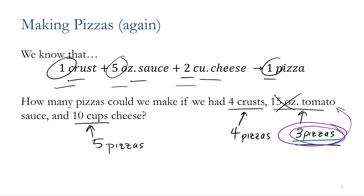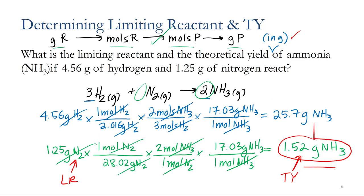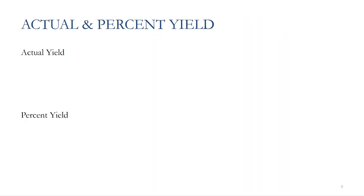We can go back to the pizza analogy to think about this. Let's say I had four crusts, 15 ounces of sauce, and 10 cups of cheese — I could theoretically make three pizzas. But what happens if I accidentally leave one in the oven too long and it's burnt? Well then, I actually only made two pizzas. The third one was burnt. The same thing happens in chemical reactions — things happen and you don't make as much product as you possibly can. There could be side reactions, byproducts, or if you have to filter material, you might lose some in the filtering process.